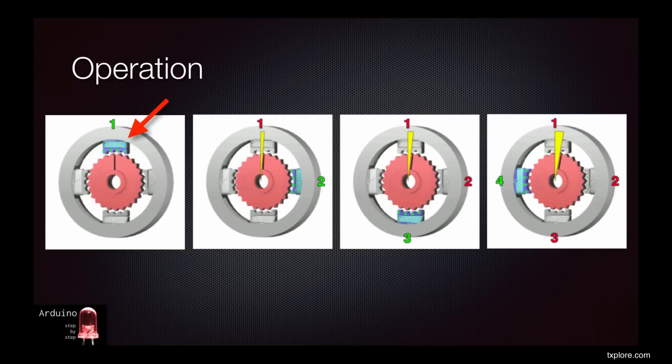In the first image, the coil of the first electromagnet is energized, and as a result, the teeth of the rotor are attracted and aligned appropriately.